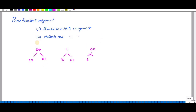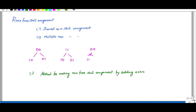In the shared row method, the first method for making a race-free state assignment is by adding extra rows in the flow table. This is referred to as shared row state assignment.